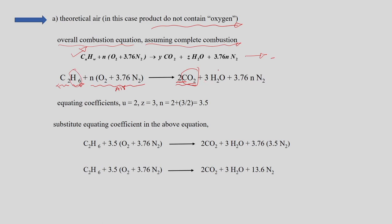Six hydrogens balance as 3H2O, and the 2 carbons balance as 2CO2 in the product. Since it is theoretical air, we have 3.76N moles of nitrogen in the product but no excess oxygen, because it is a stoichiometrically balanced equation where no excess air is used.